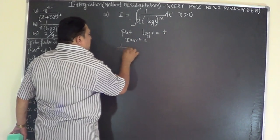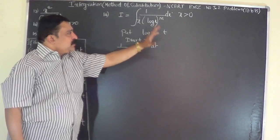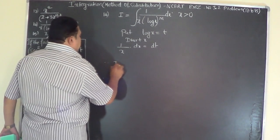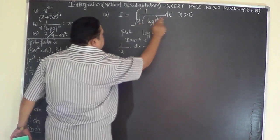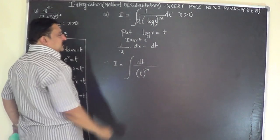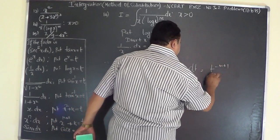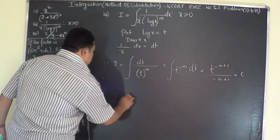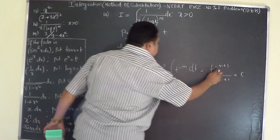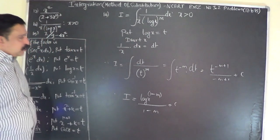Differentiating with respect to x: (1/x) dx = dt. Therefore I becomes the integral of dt / t^m, which equals the integral of t^(−m) dt, giving t^(−m+1) / (−m+1) + C. Substituting back t = log x, the answer is (log x)^(−m+1) / (−m+1) + C. The power of log x is (−m+1).